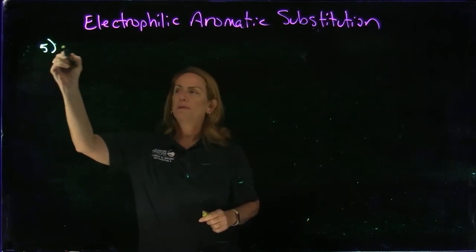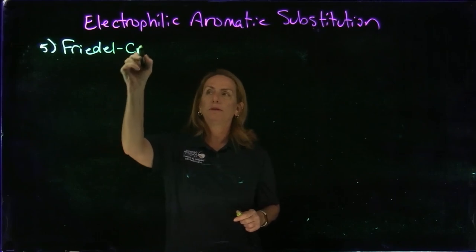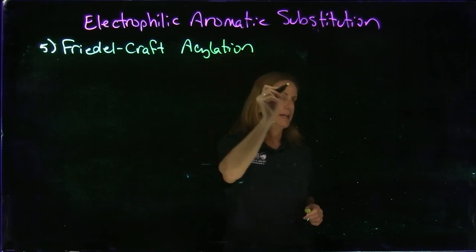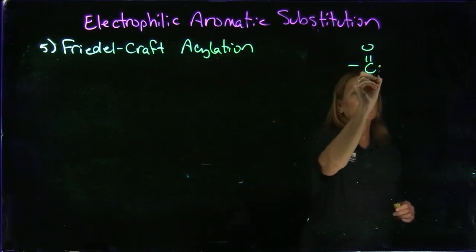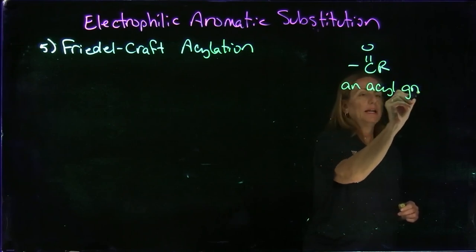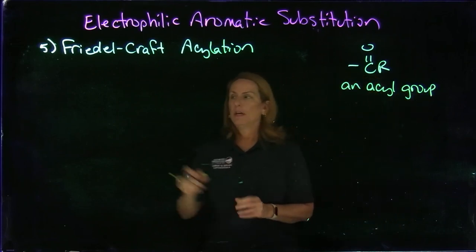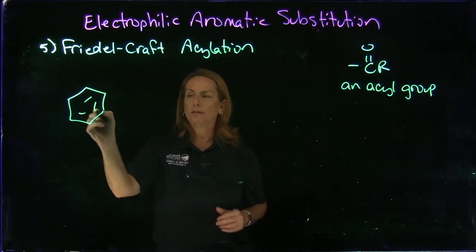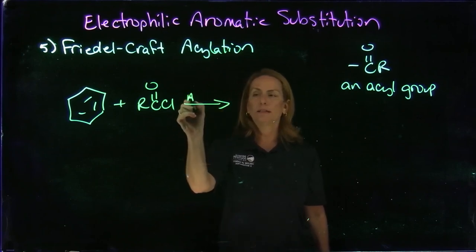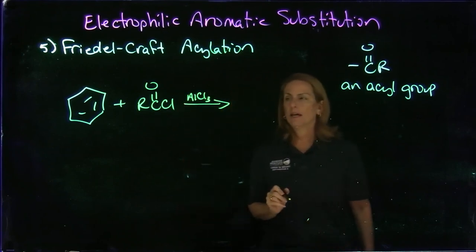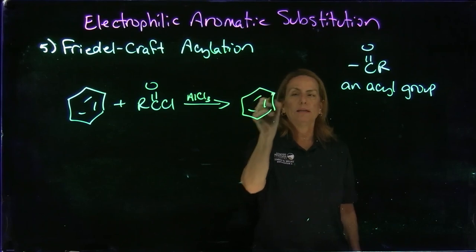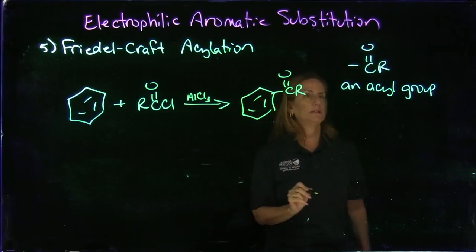The fifth reaction was also developed by Friedel and Crafts, but in this case it is an acylation. An acyl group is essentially an alkyl group with a carbonyl. Now we're adding a carbonyl directly to the benzene ring. It's very similar to the alkylation, but now we would have an acyl halide, an acyl chloride in this case, with the same AlCl3 catalyst. The mechanism is a little different—there's some resonance going on—but we are adding the acyl group. Make sure you add it with the carbonyl attached to the benzene ring and not the R group.